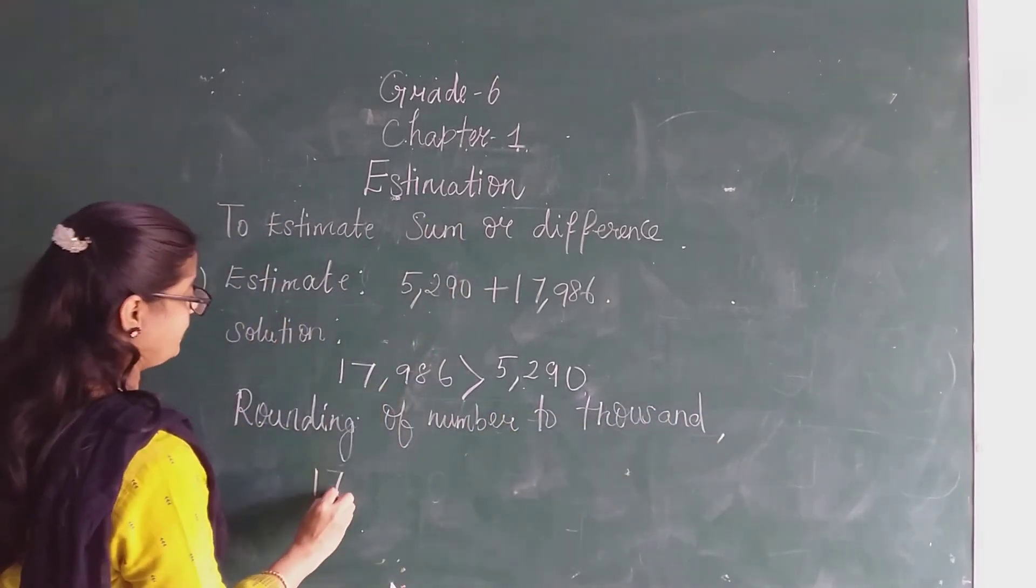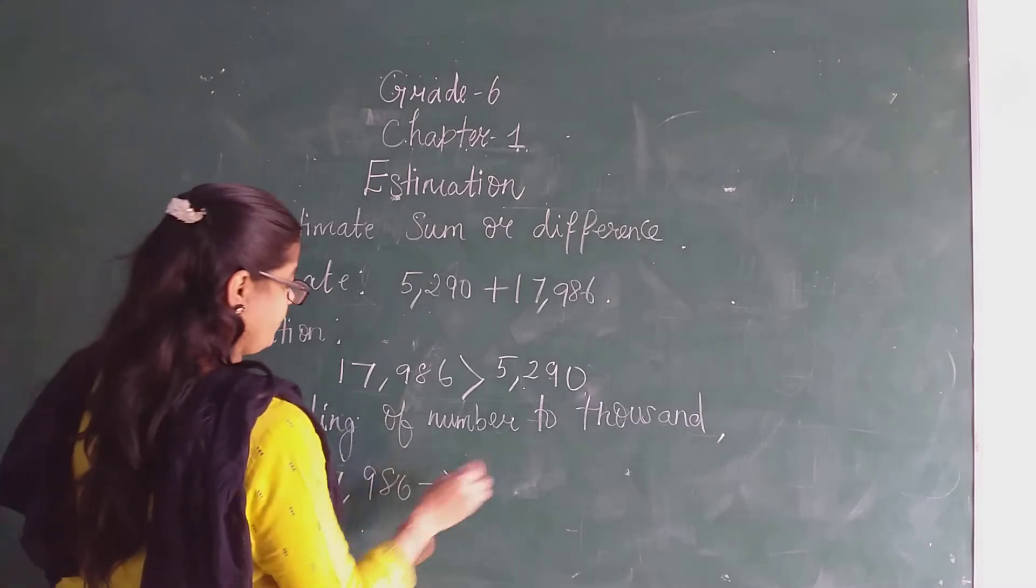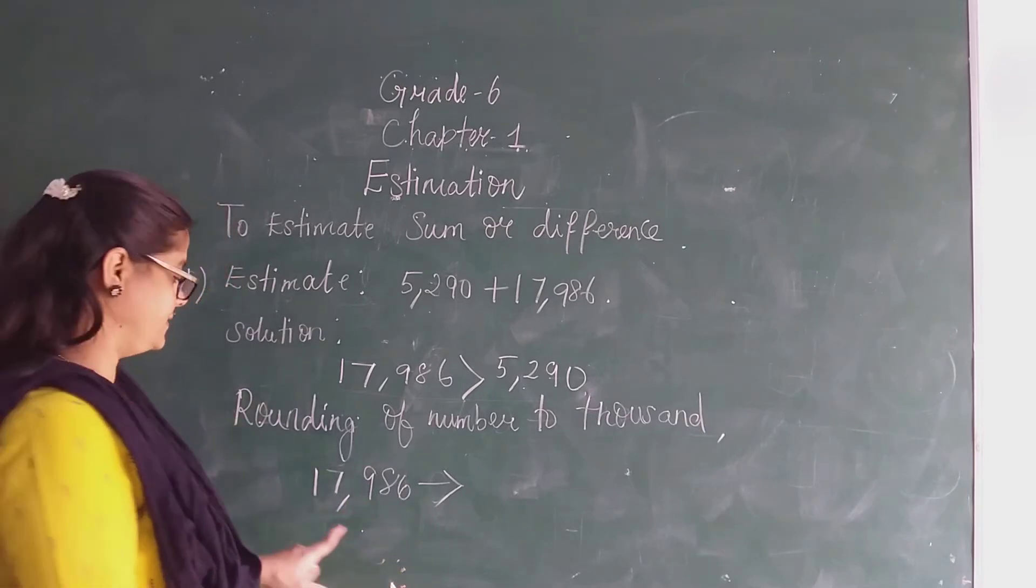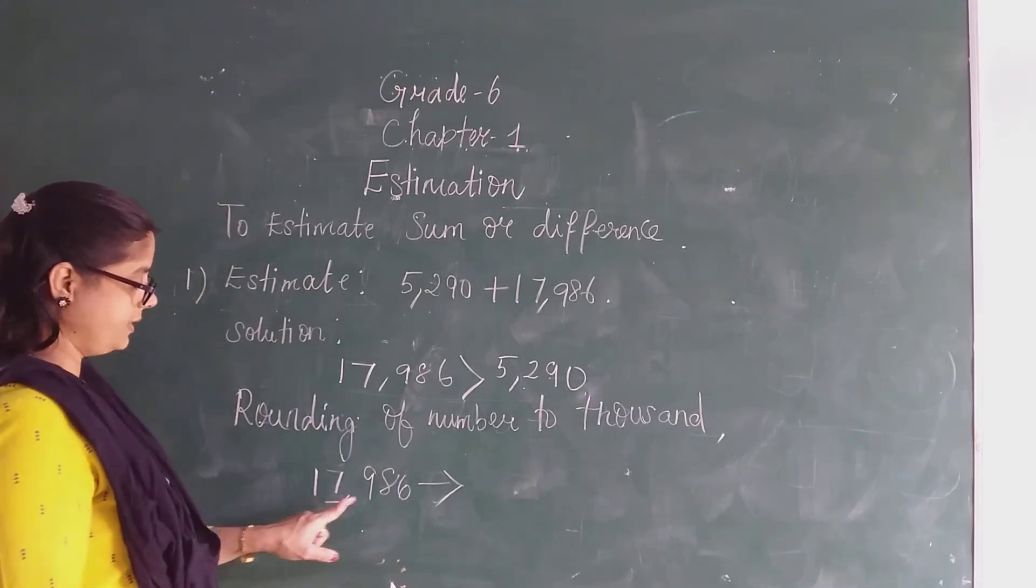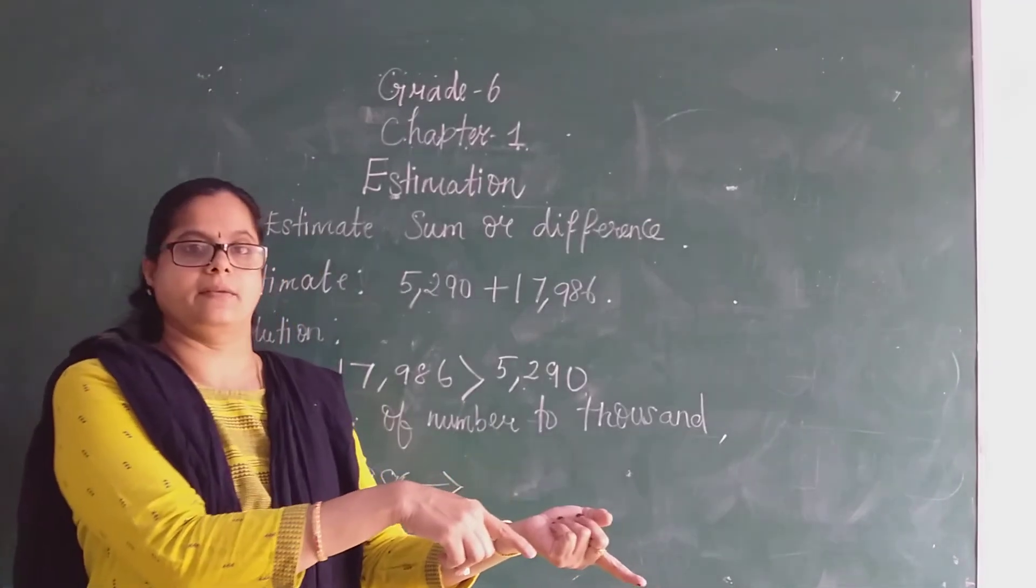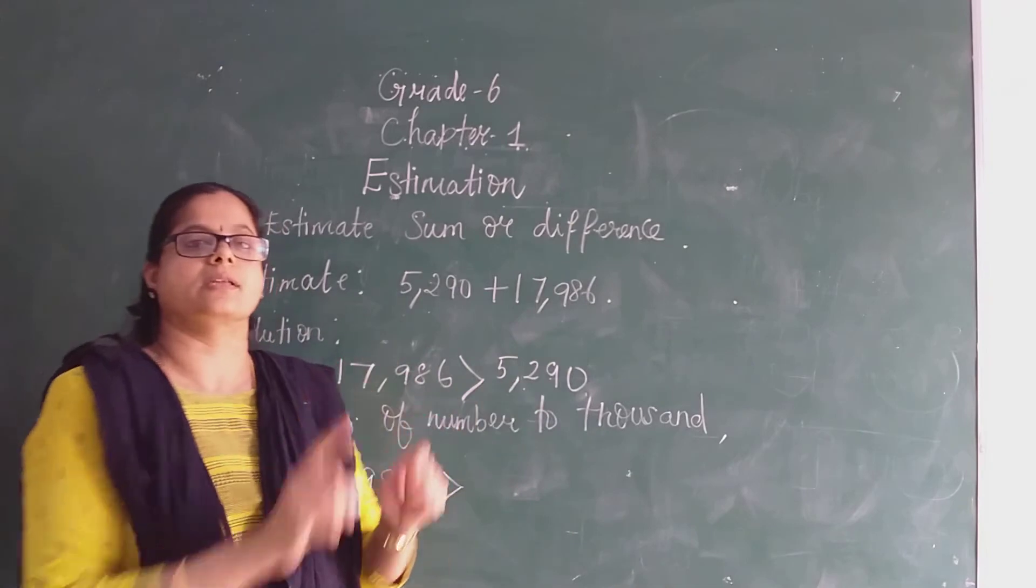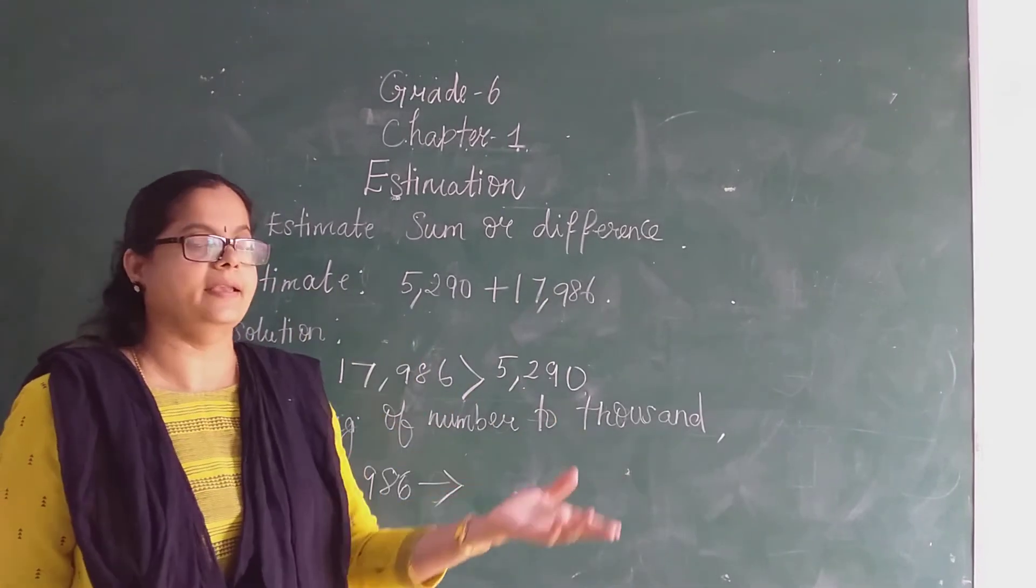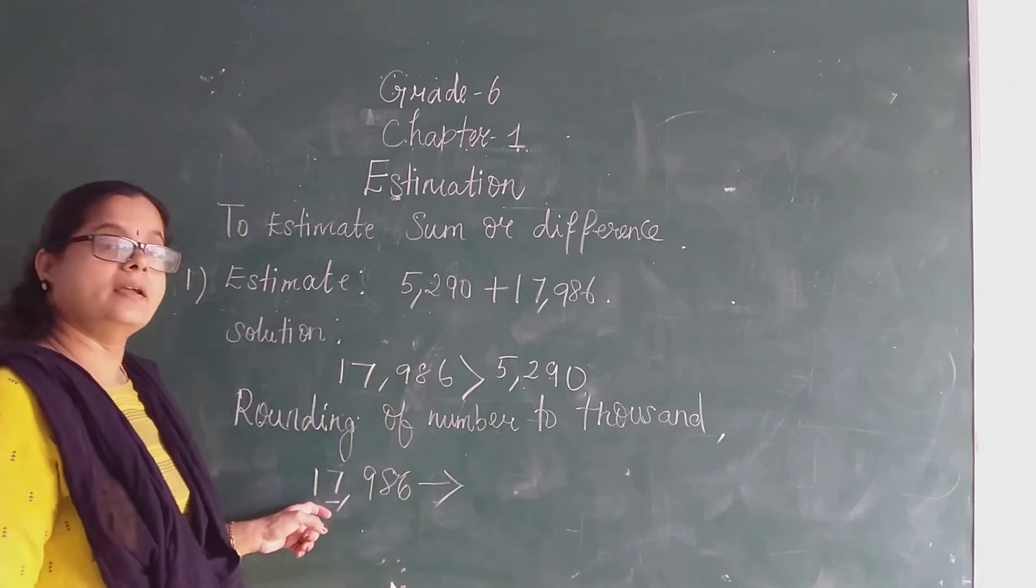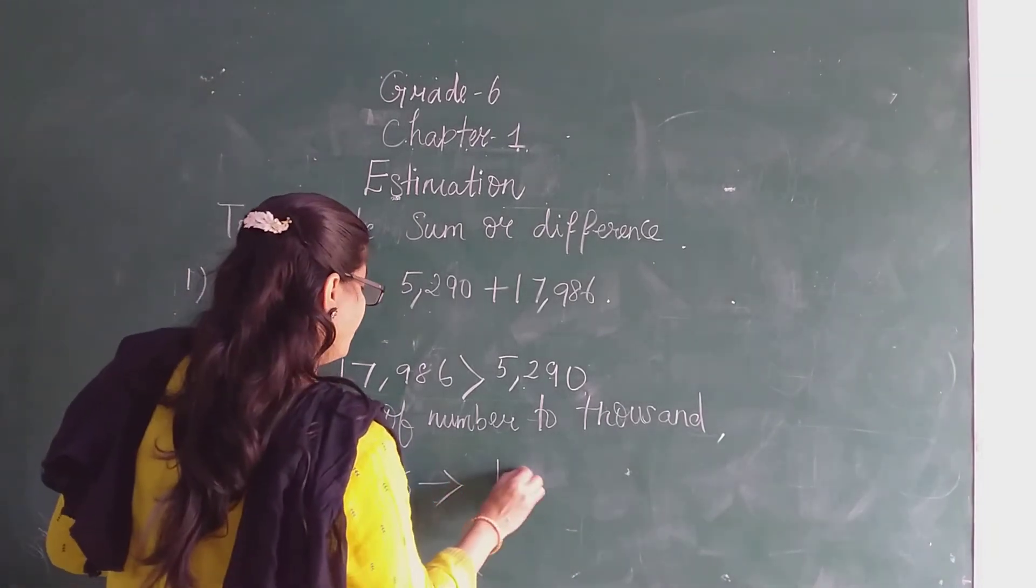Take the number 17,986. Round it off to thousand. So we should take the thousand number. It will come to be 7,000 to 8,000. This 7,986 will come to be 7,000 to 8,000. Since it is 7,986, because 986 is greater than 500, it will become 8,000.